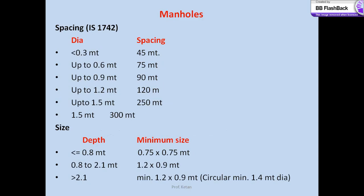The spacing of manholes, as given by Indian Standard 1742, depends on the diameter. If the diameter is less than 0.35 meter, the spacing would be 45 meters. Up to 0.6 meter it would be 75 meters. Up to 0.9 meter it would be 90 meters. Up to 1.2 meter it would be 120 meters. Up to 1.5 meter it would be 250 meters, and above 1.5 meters it would be 300 meters.